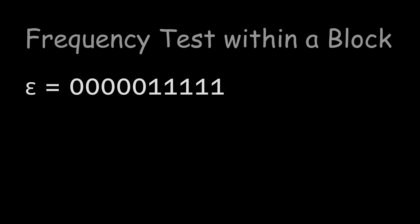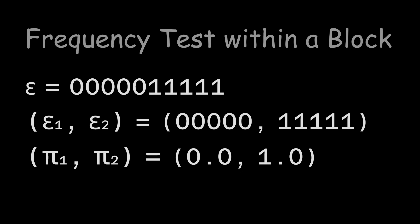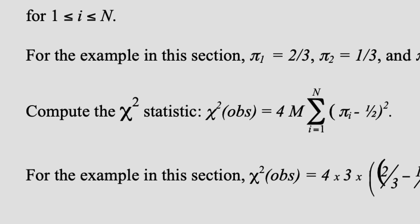The second test is the frequency test within a block test. We take the input string and split it into two blocks. Then we compute the percentage of ones within each block. Then we compute the chi-squared statistic by using the formula shown. But why does the chi-squared formula not divide by the expected values? And why are we multiplying by 4m?